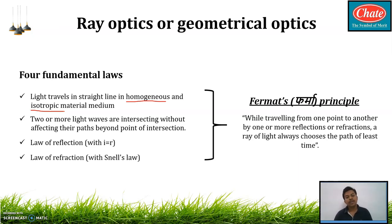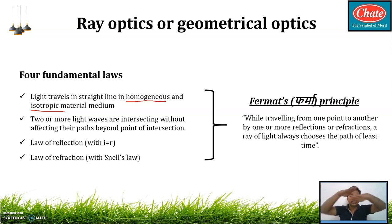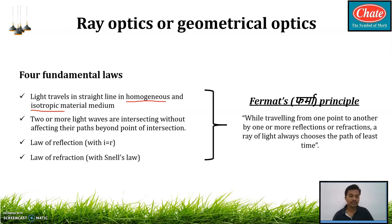The second law states: two or more light waves intersecting each other do not affect their respective paths beyond the point of intersection. For example, if a red light and a green light cross each other, after the intersection each continues on its own path unchanged.